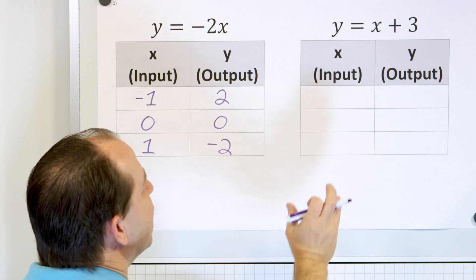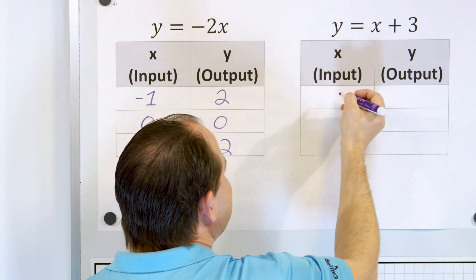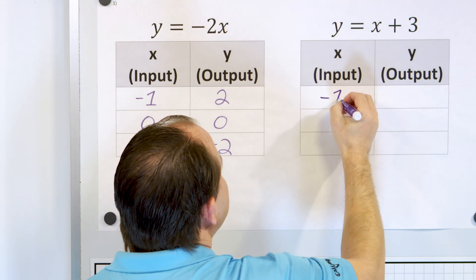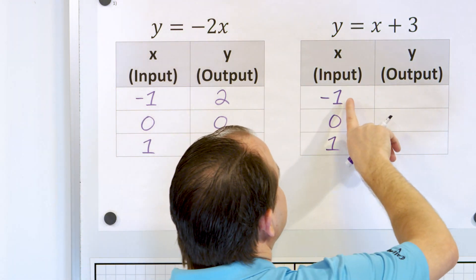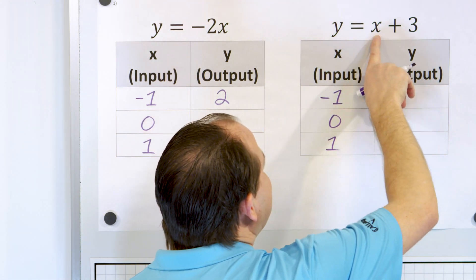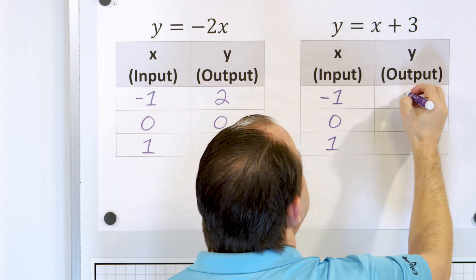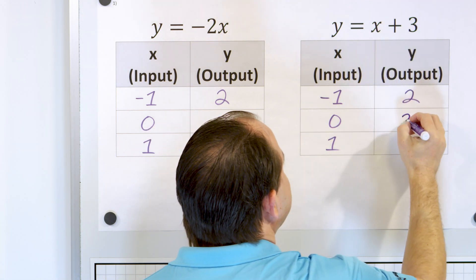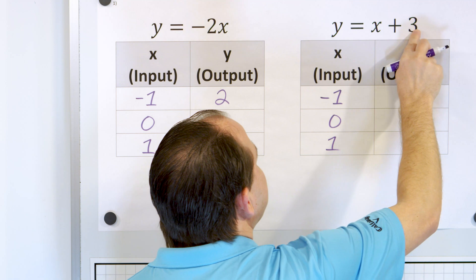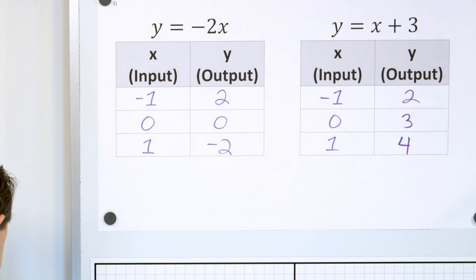Before we do that, let's go on to the second equation. Again, I can choose whatever I want. I'm going to choose negative 1, 0, and positive 1 — just nice, easy numbers. If I put negative 1 in for x, then negative 1 plus positive 3 gives me positive 2. If I put 0 in, plus 3 gives me 3. And if I put 1 in, 1 plus 3 is 4. So you can always graph things with input-output tables.